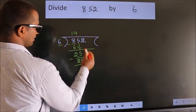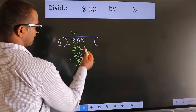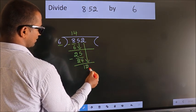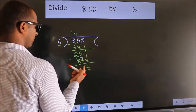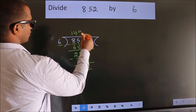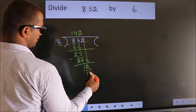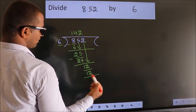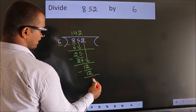After this, bring down the beside number. 2 down. So, 12. When do we get 12 in 6 table? 6 twos 12. Now we subtract. We get 0.